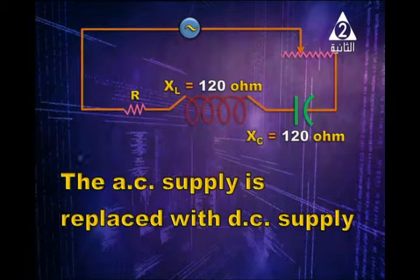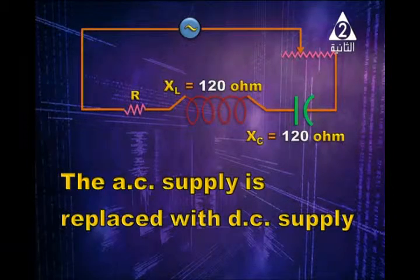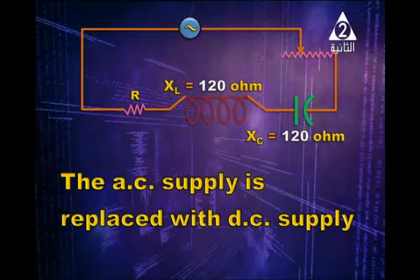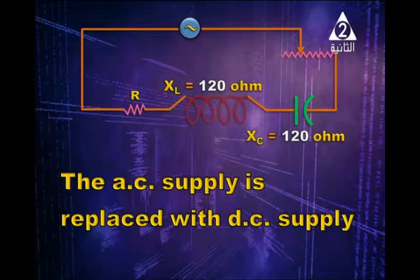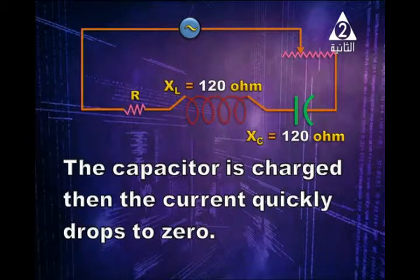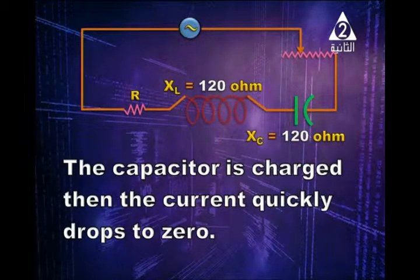If the AC supply is replaced with a DC supply, the capacitor will get charged, and then the current quickly drops to zero. So the answer is: the capacitor is charged, then the current quickly drops to zero.